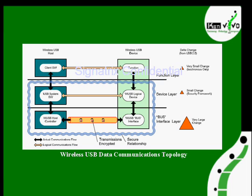As in a USB system, here also we have three separate layers. This is the host side and this is the device side — wireless USB host and wireless USB device. On the host side, we can separate the entire wireless USB system into three layers. The first layer at the top is the client software layer. Under that we have the USB system software layer, and at the bottom we have the wireless USB host controller.